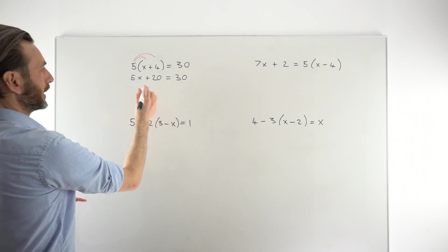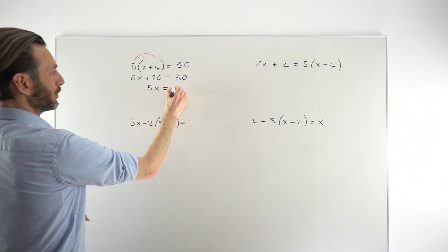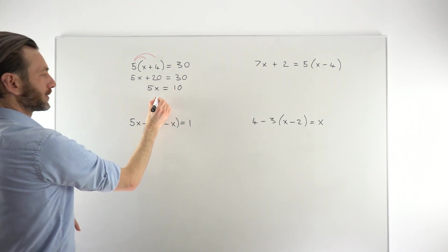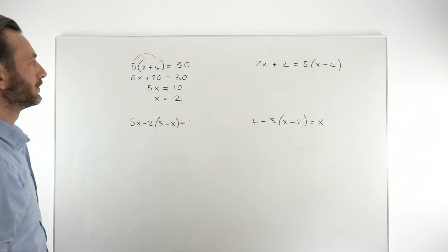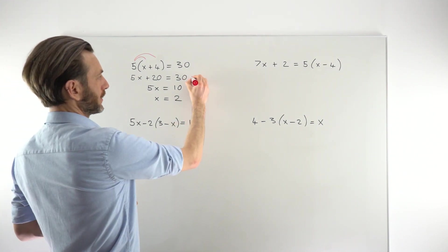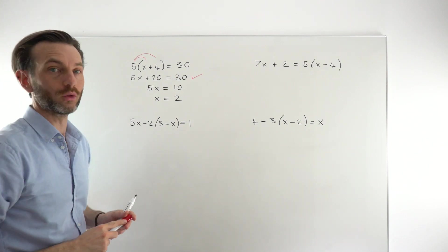So we're just going to move the 20 to the other side, leave the 5x on the left-hand side. That would be 30 minus 20 to give us 10. Divide both sides by 5 to give us x equals 2. So notice that really by the time that you've expanded the bracket and got to this point here, then everything after that just flows like a normal linear equation.